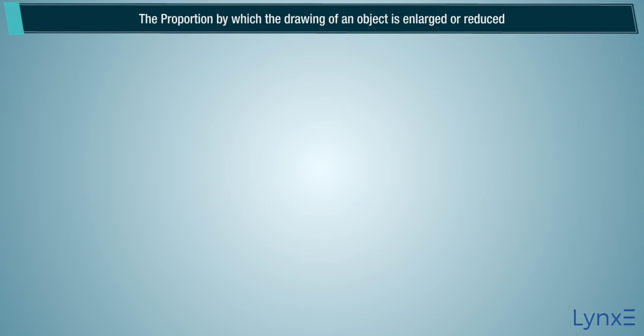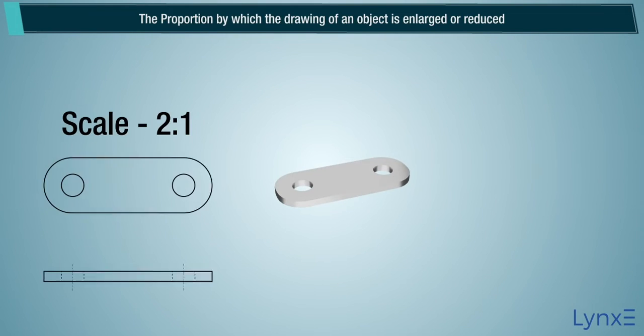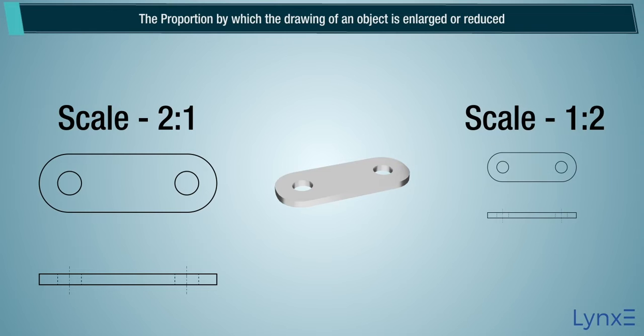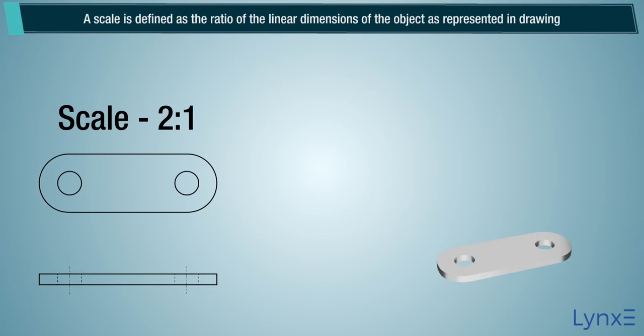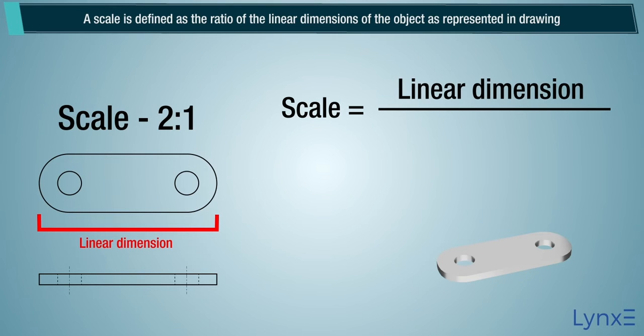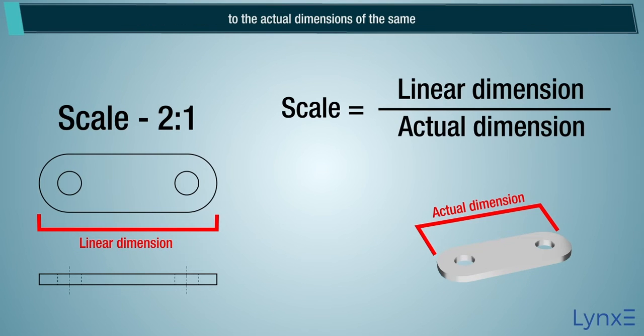The proportion by which the drawing of an object is enlarged or reduced is called the scale of the drawing. A scale is defined as the ratio of the linear dimensions of the object as represented in drawing to the actual dimensions of the same.